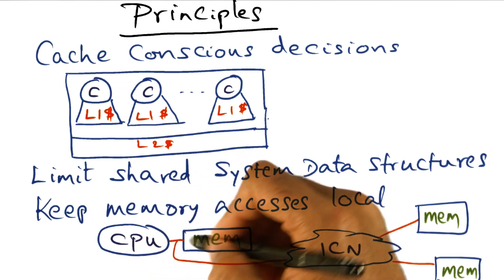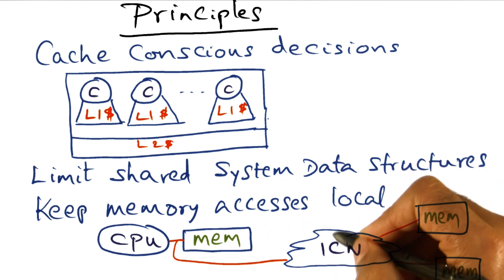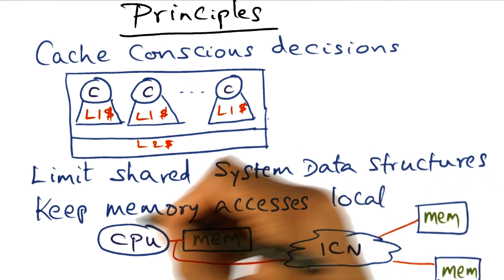Already the distance is pretty big when you go outside the chip and access the memory over here. But the distance is even more if you have to traverse the interconnection network and reach into a memory that is on a different node of the multiprocessor.